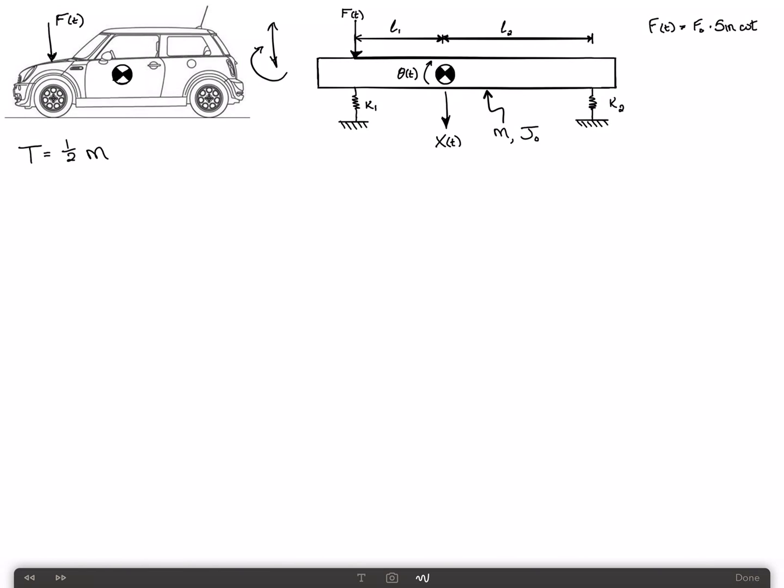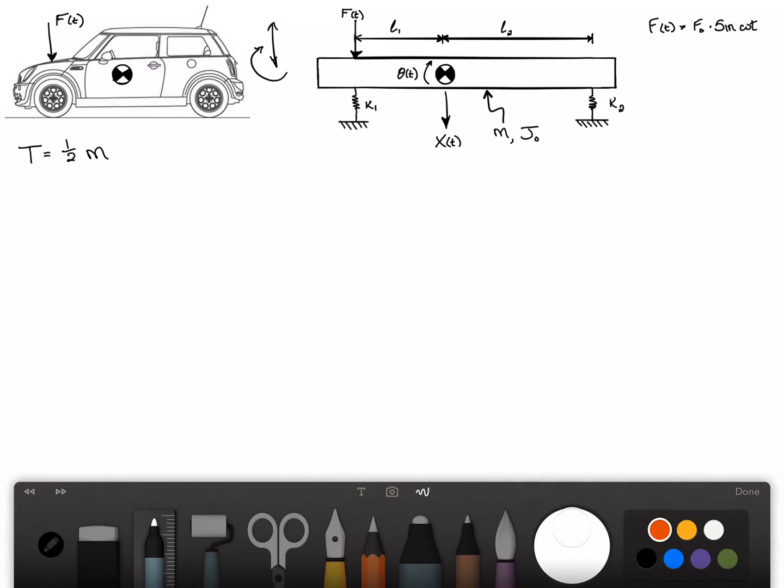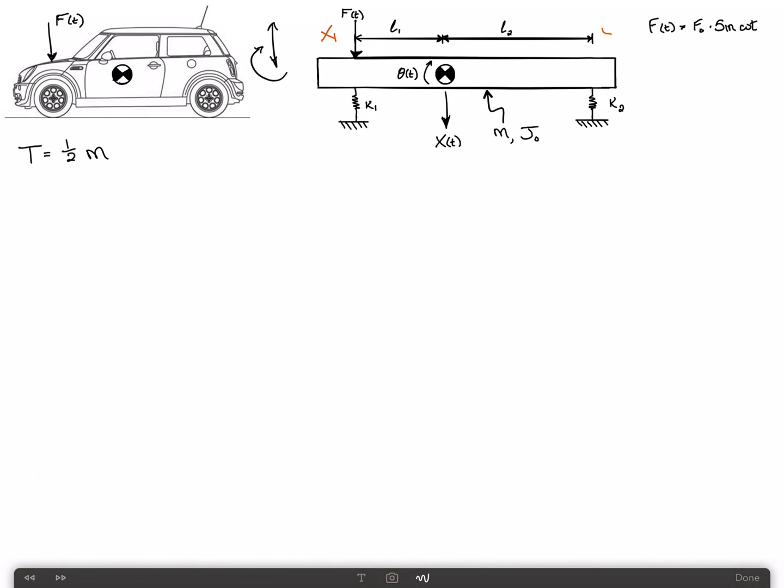It's probably useful to mention that I could have chosen other coordinates, right? I could have said, we will call this X1 and X2, which is the displacement of the mass above each of the wheels. Or I could have said, let's just call this X over here and theta. It's fairly arbitrary. Based on the coordinates that you choose, you might find different coupling.